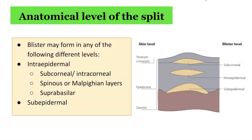Within the intraepidermal group, the blister may appear in the subcorneal level, in the spinous or Malpighian layers, or in the suprabasilar level just above the dermal-epidermal junction. Blisters can also form in the subepidermal layer. The different levels correspond to the different molecular proteins targeted in the autoimmune condition. For example, if a patient has an autoimmune antibody against a target antigen in the upper epidermis, then the blister will occur in the intraepidermal or subcorneal levels.